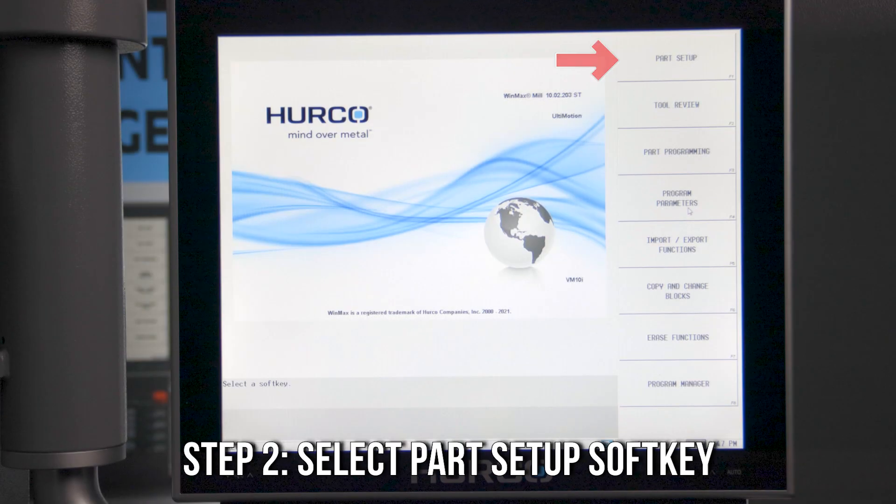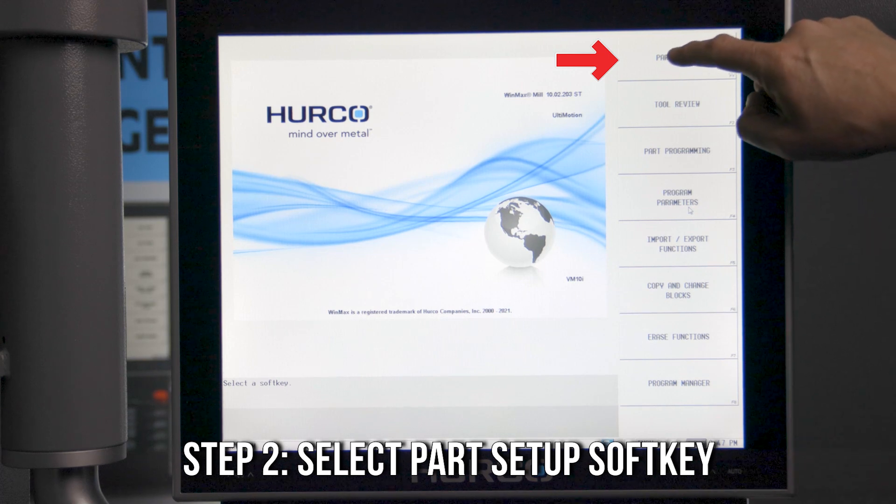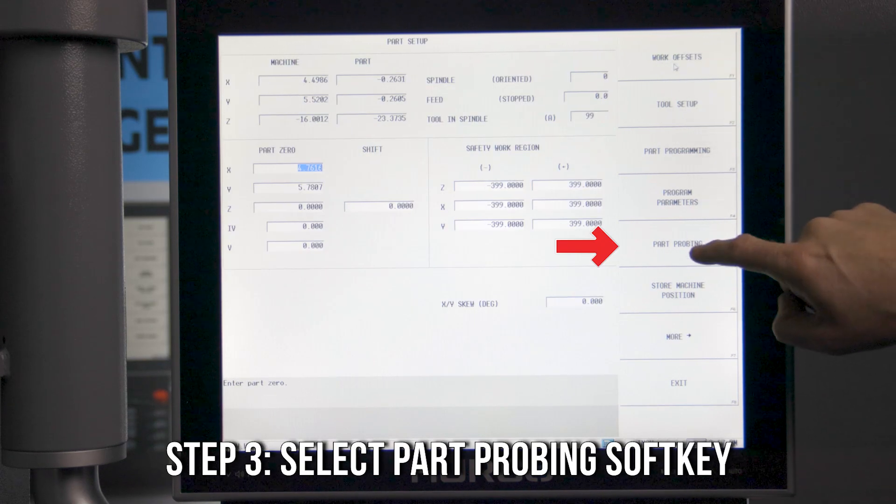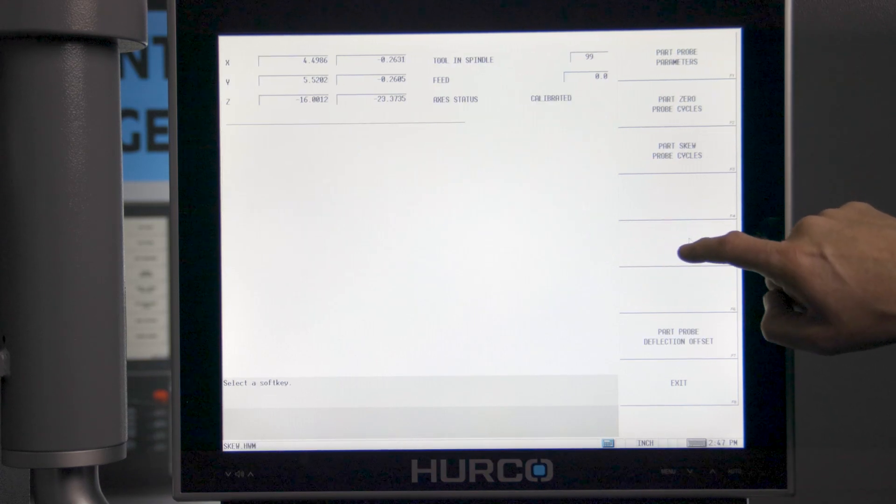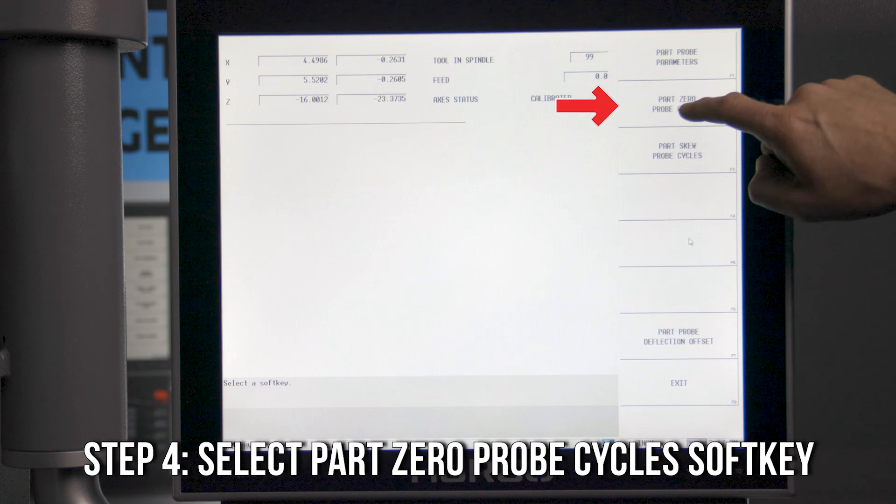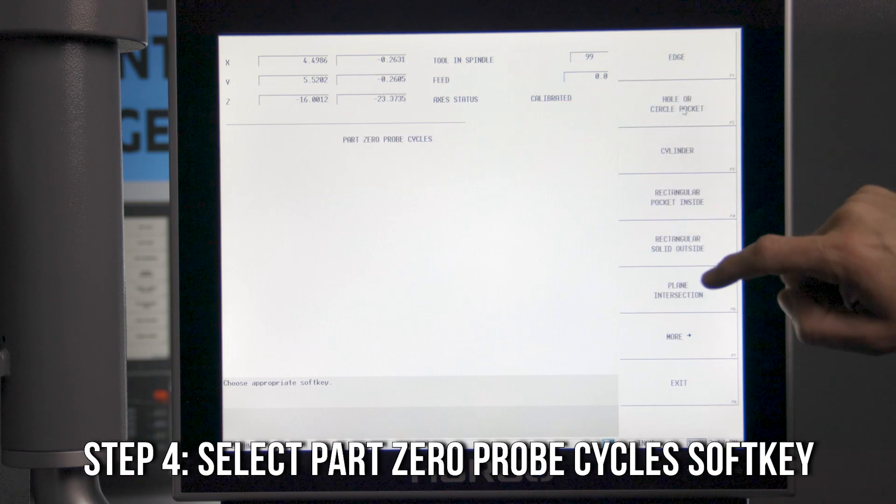Press the input key, then select part setup soft key. You'll then need to pick the part probing soft key. We need to find our part zero first, so you will want to select the part zero probe cycle soft key.